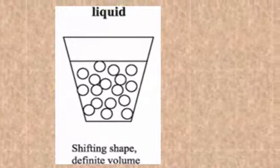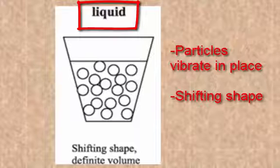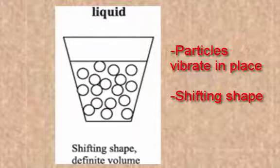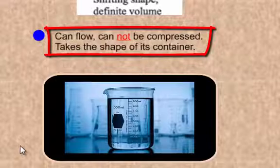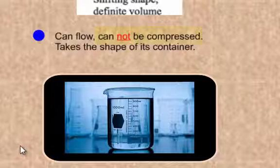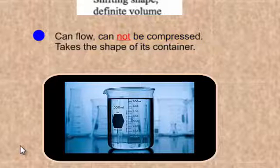The next category or state of matter is liquids. The particles are still vibrating in place, but you're going to have a shifting shape, meaning that the liquid can take the shape of its container. So it can flow. There's no particular shape that a liquid has to be in as opposed to a solid. But the key thing is that you cannot compress a liquid. If you had 10 milliliters of a liquid, you're always going to have 10 milliliters.